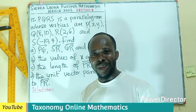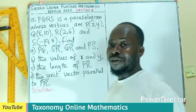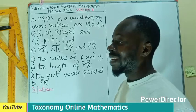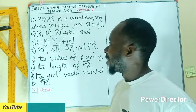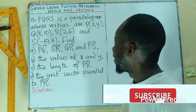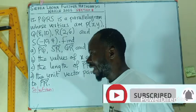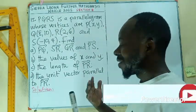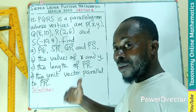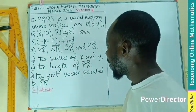Hello, welcome to the last question, which is question 15 for the Sierra Leone Further Mathematics. PQRS is a parallelogram whose vertices are given. We have to find the vectors PQ, SR, and so on. Let's take them one by one as we are reading the question together.